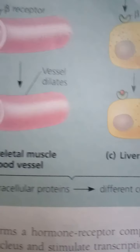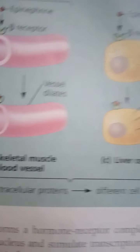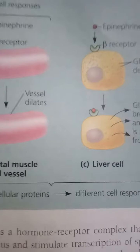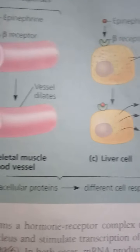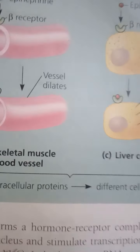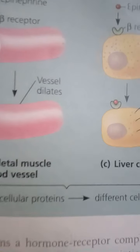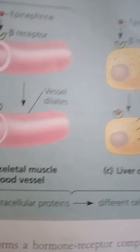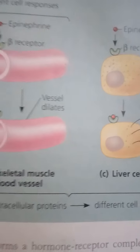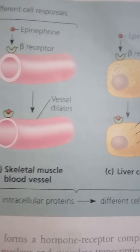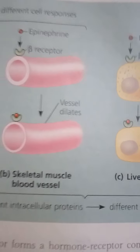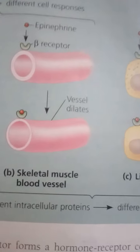In almost all cases, the intracellular receptor activated by a lipid-soluble hormone is a transcription factor, and the response is a change in gene expression. Most intracellular receptors are already located in the nucleus when they bind hormone molecules, which have diffused in from the bloodstream via the extracellular fluid. The resulting hormone-receptor complexes then bind to specific sites in the cell's DNA and stimulate the transcription of specific genes.